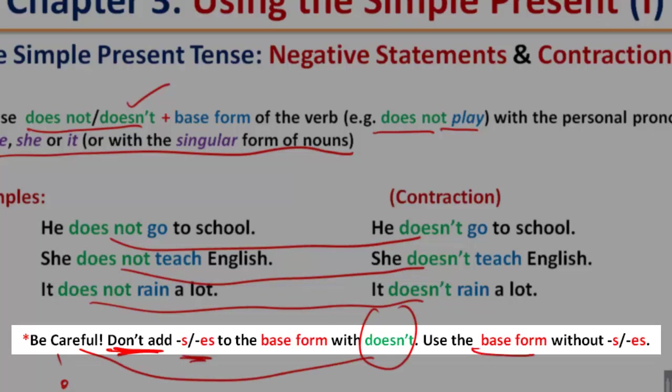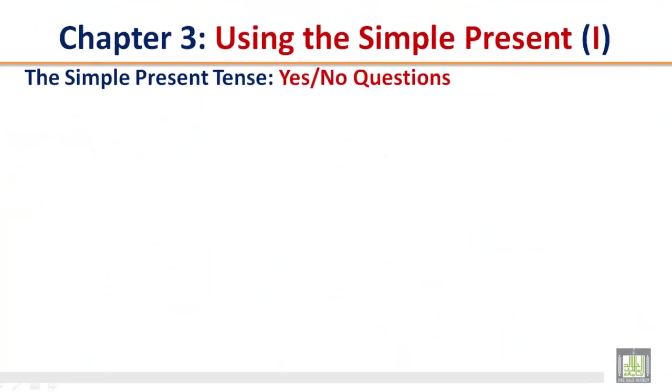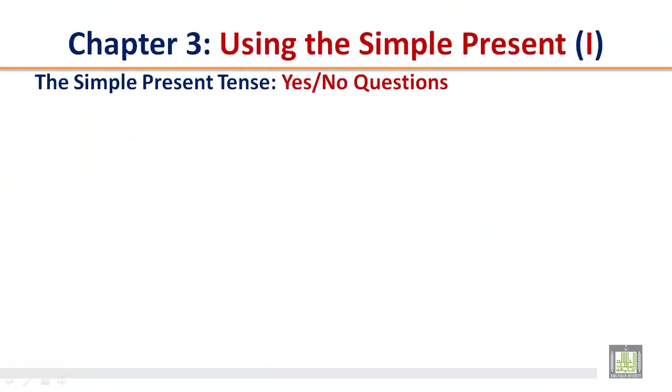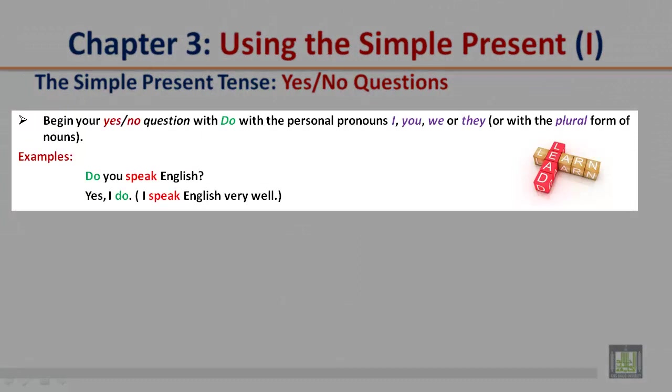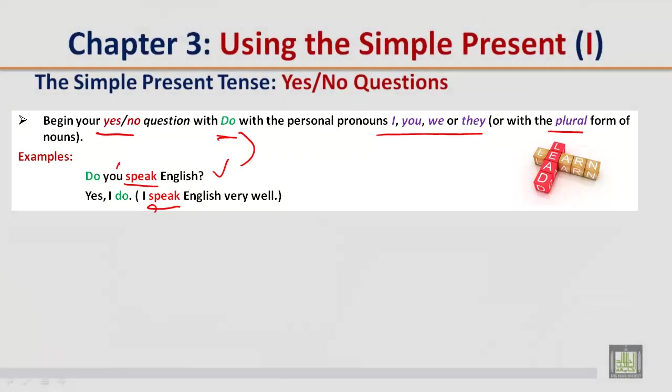Use the base form without S or ES. The simple present tense: yes or no questions. Begin your yes or no question with do, with the personal pronouns I, you, we, or they, or with the plural form of nouns. Here are the examples: Do you speak English? In this example, we begin our question with do, with the personal pronoun you. Speak is the base form of the verb. And the answer would be yes, I do. I speak English very well.